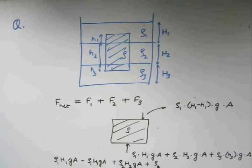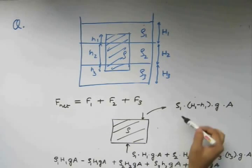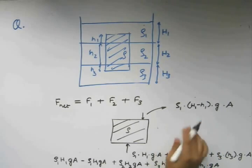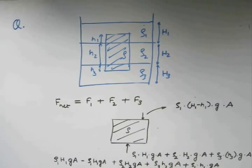Also we will have rho3 H3 G A. Also we will have rho1 into H1 into G into A. Note that this minus sign gets cancelled off because of the negative sign which we applied while subtracting this quantity from this. This part gets eliminated. Now we have this, this, and this.